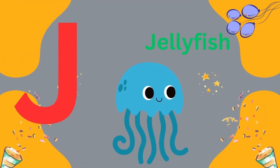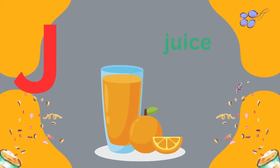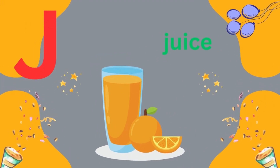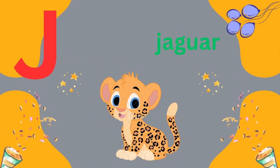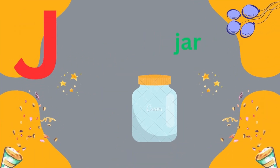V is for jellyfish. J is for juice. J is for jaguar. J is for jar.